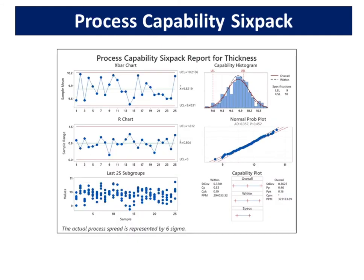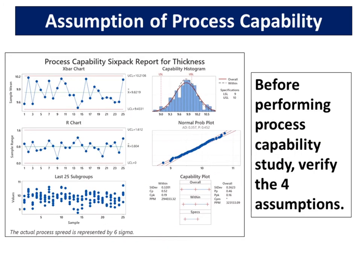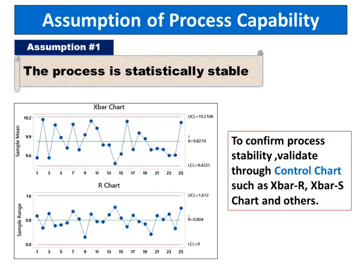Here is the process capability six-pack graph. Before performing a process capability study, verify the four assumptions. The first assumption is that the process is statistically stable. To confirm process stability, validate through control charts such as X-bar R, X-bar S chart and others.